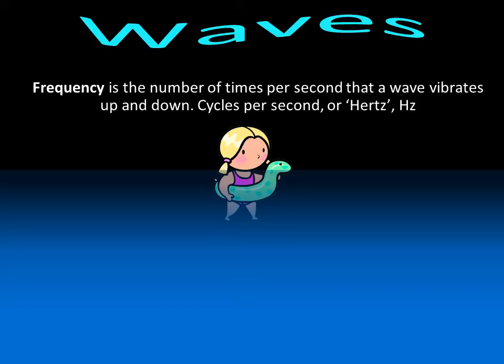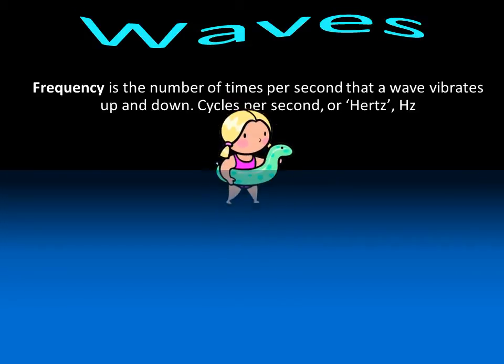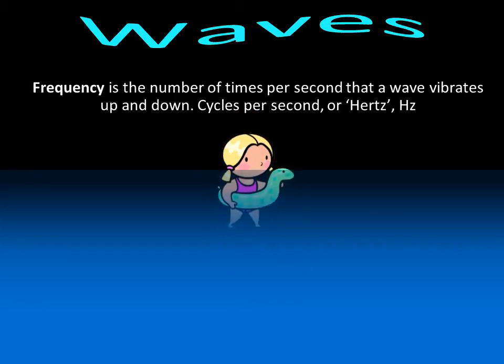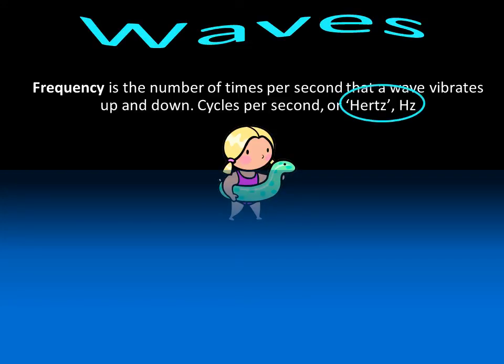For example, if you're watching a water wave and you see the wave bob up and down five times every second, then the frequency is five cycles per second. We use the unit hertz to indicate cycles per second.